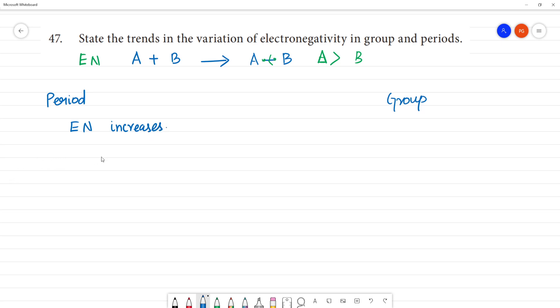Fluorine has the highest electronegativity value, 4. Oxygen has the electronegativity value 3.5. Then nitrogen, having 3. Then carbon, having 2.5.